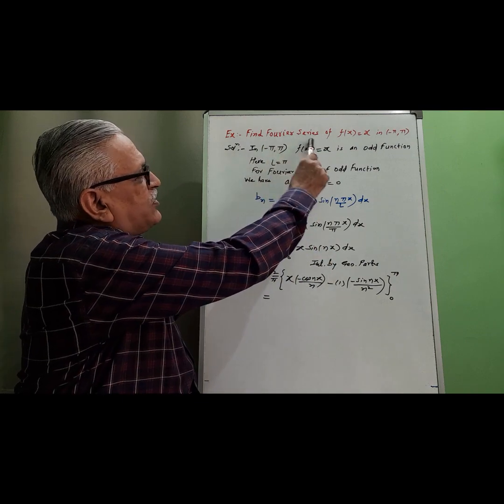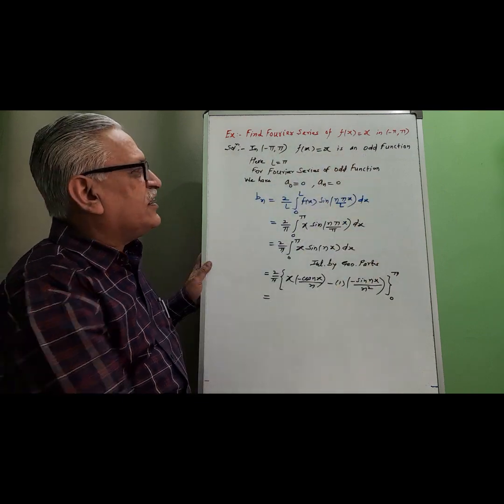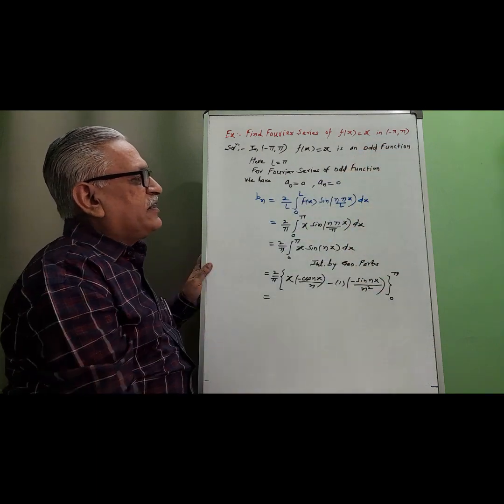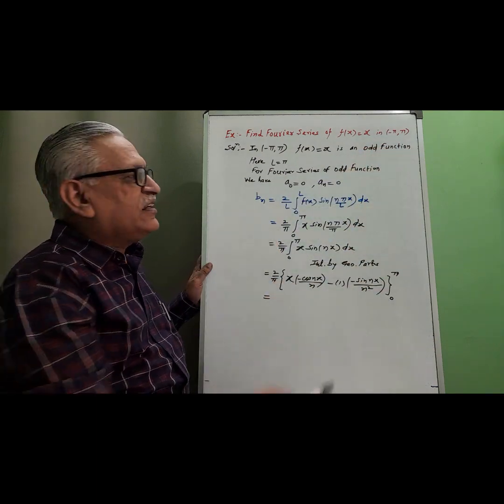Hello friends. Find Fourier series of f(x) = x in the interval -π to π. In that interval, that function is an odd function.